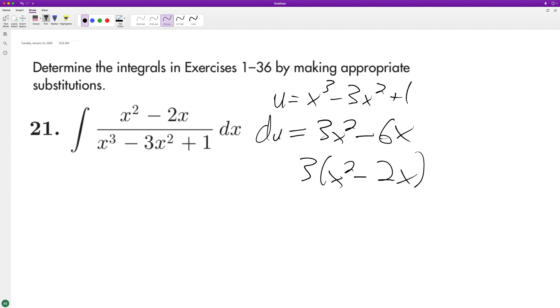All right, and then that means to get du equal to dx, we need to multiply by a third, and that means we'll have 1 third u raised to negative 1 du.